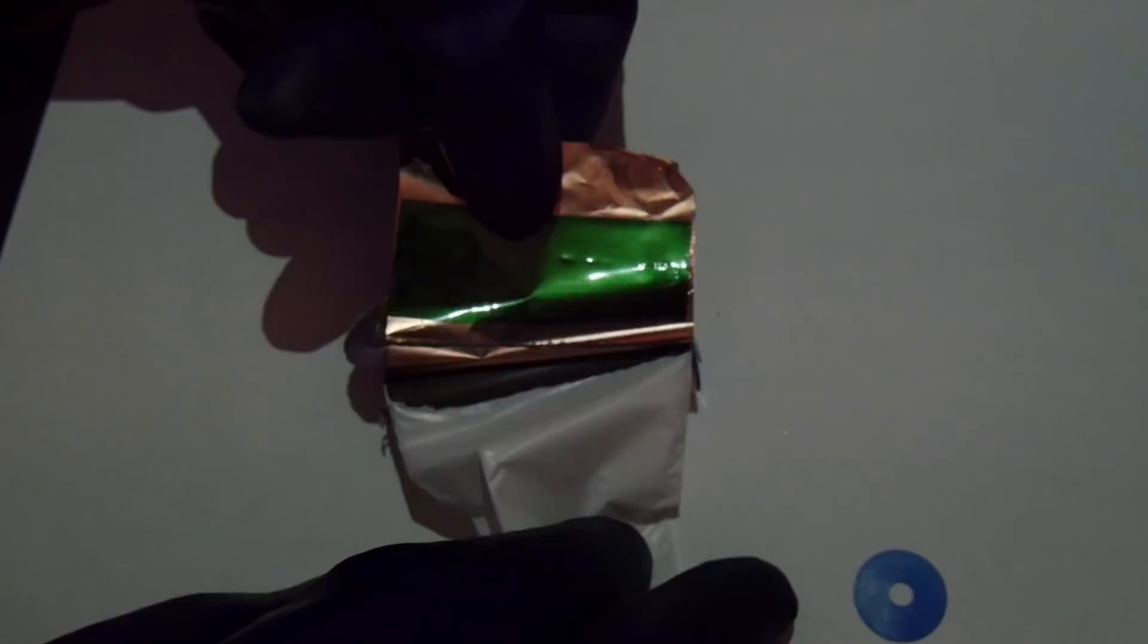As I unroll the jelly roll even more, we come to this green layer. Now this layer acts as a piece of adhesive to prevent the ground connection from tearing loose.